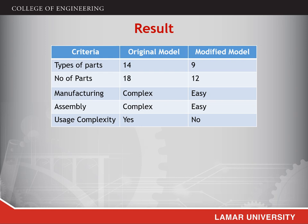Results: When comparing the original and modified models, the original model contains 14 types of parts, reduced to 9 in the modified model. The number of parts went from 18 down to 12. Manufacturing complexity, which was a difficult process in the original, becomes easy in the modified model. Assembly, which was complex for the original model, is easy in the new model. Usage complexity, which was present in the original, is eliminated in the modified model.